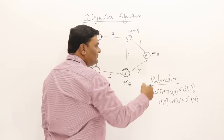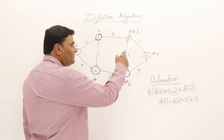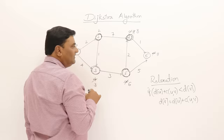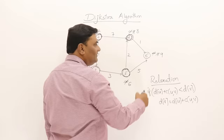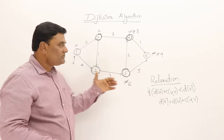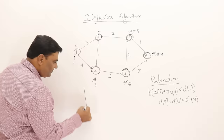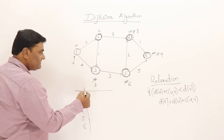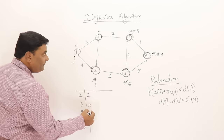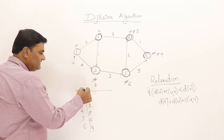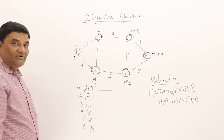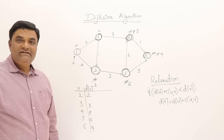Two vertices are modified — they are relaxed. The remaining vertices are 4 and 6. The minimum is 8, so select that one. Checking relaxation: 8 plus 1 is 9, and the current distance is 11, so modify it to 9. Now the last remaining is 6. So we now have the shortest path from starting vertex 1 to all other vertices: vertex 2 is 2, vertex 3 is 3, vertex 4 is 8, vertex 5 is 6, and vertex 6 is 9. These are the distances of all the vertices.